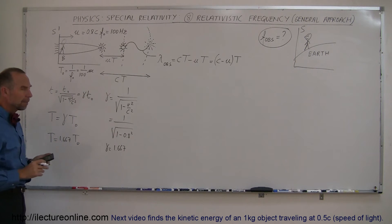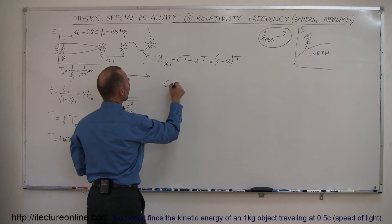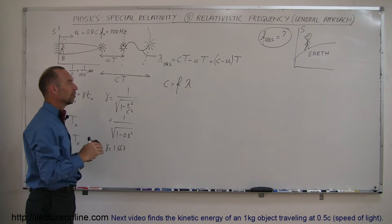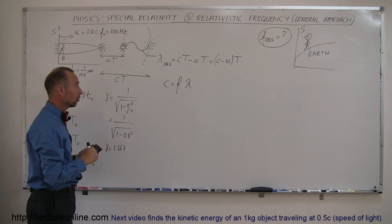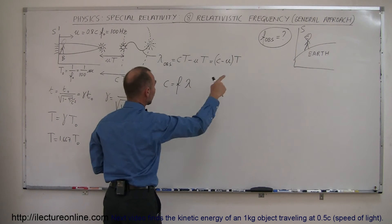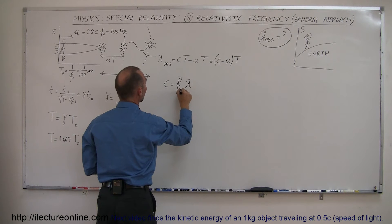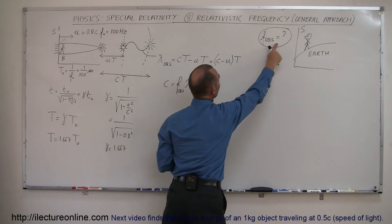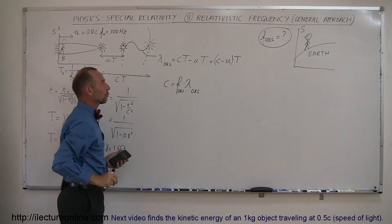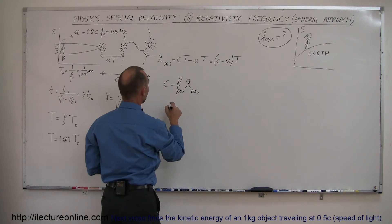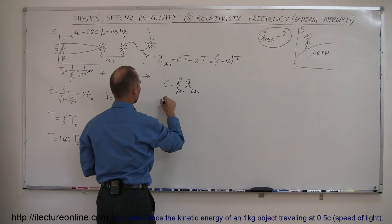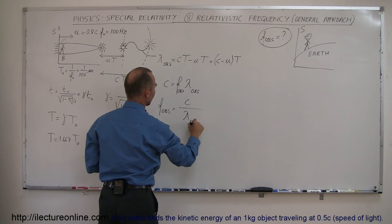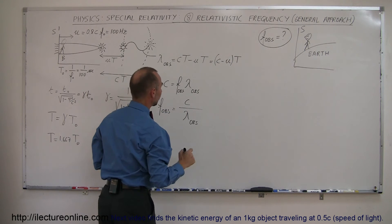Remember that the speed of light C equals frequency times wavelength, and the speed of light is the same for every observer, no matter what the observer or source is doing. So for the observer on Earth, C equals the observed frequency times the observed wavelength. The observed frequency is what we're looking for, and the observed wavelength comes from the earlier equation. So we rearrange: the observed frequency equals C divided by lambda observed, and lambda observed comes from the equation C minus U times T.